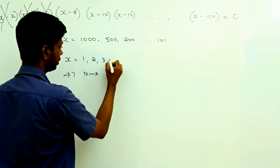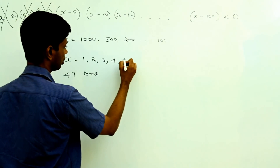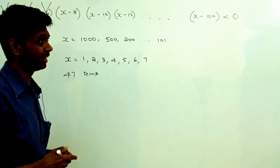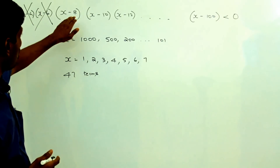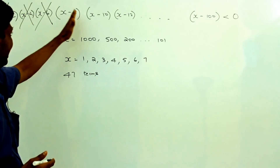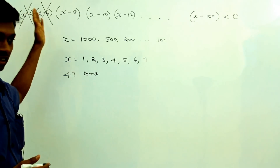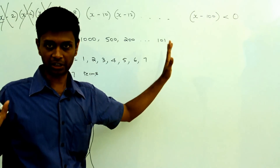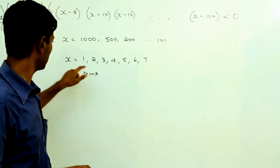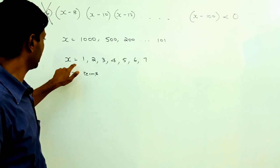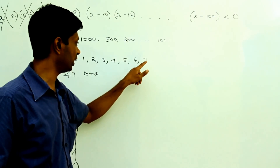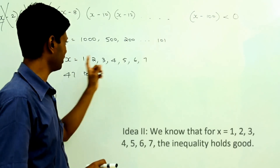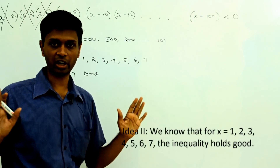So x equal to 1 will work, and so will 2, 3, 4, 5, 6, and 7. For all values less than 8, each of these terms will be negative and the product will be negative. If it works for x equal to 1, it will work all the way till x equal to 7. That is 7 values where it works straight away.